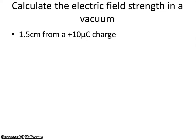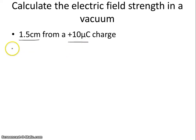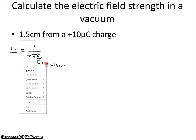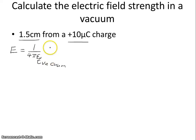How can you calculate the strength of the electric field 1.5 centimeters from a positive 10 microcoulomb charge? The strength of an electric field is equal to 1 over 4 pi epsilon naught — this assumes we're in a vacuum. If we're not in a vacuum, you need to use something other than the permittivity of free space, which will probably be given by the problem. This is multiplied by the charge over the distance from the charge squared.